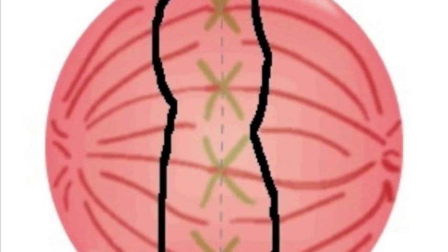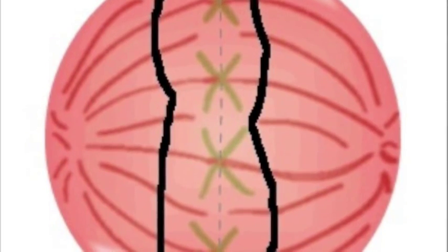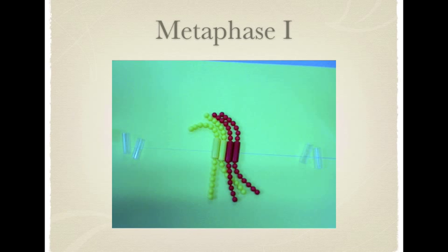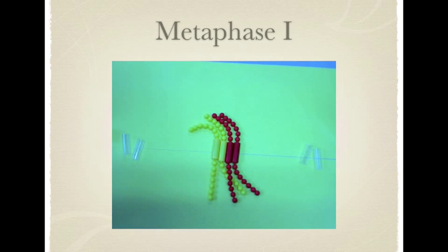Metaphase 1 begins with a pair of homologous chromosomes arranged at the metaphase plate. Both chromatids of one homolog are attached to a kinetochore microtubule from one pole, and the other chromatid is attached to the opposite pole.